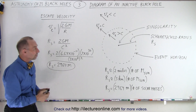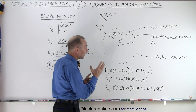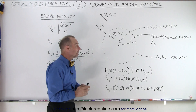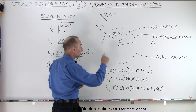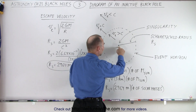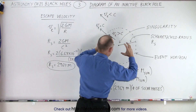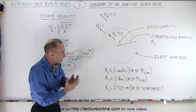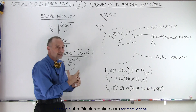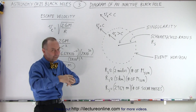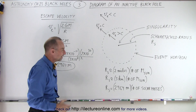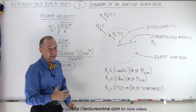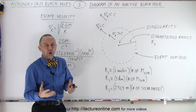The diagram is fairly simple. There are three things belonging to it. In the very center we have what we call the singularity — that's where all the mass is congregated. We think of it as virtually zero volume and therefore almost infinite density. Maybe it is zero volume and infinite density — we really don't know.